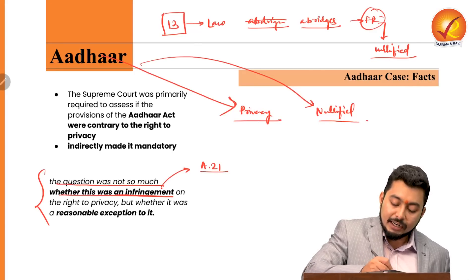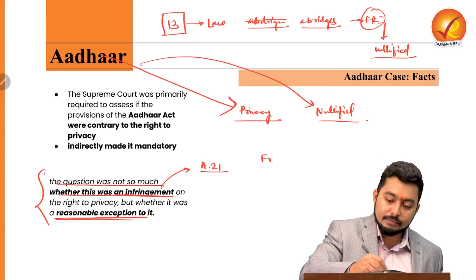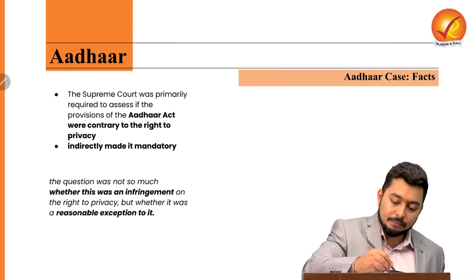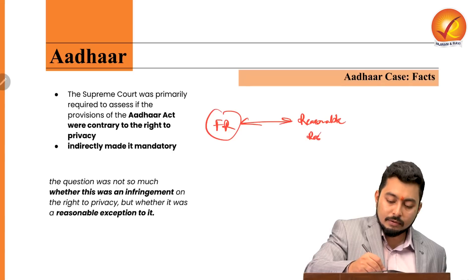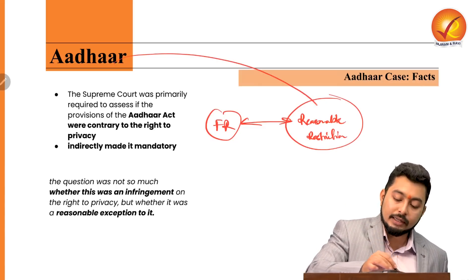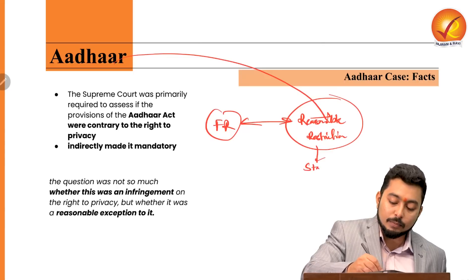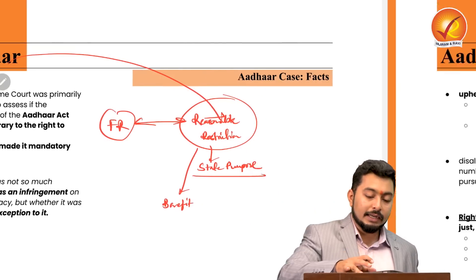Whenever there is a fundamental right, it comes coupled with reasonable restrictions. The idea was whether Aadhaar constitutes a reasonable restriction because it serves a state purpose — to benefit people. The court needed to determine whether Aadhaar is a just, fair, and reasonable law. If we have such a law, we can somewhat limit privacy as a reasonable restriction. What is needed is: first, a proper law from Parliament; second, a legitimate state aim; and third, proportionality.